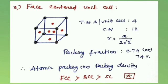The third type is the face-centered unit cell (FCC). All eight corners and the six faces are occupied by constituent particles. The total number of atoms per unit cell equals 4, the coordination number is 12, the radius equals a/(2√2) or a/√8, and the packing fraction is 0.74 or 74%. The packing efficiency order is FCC > BCC > SC.